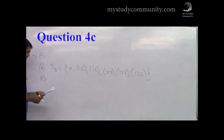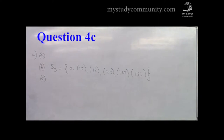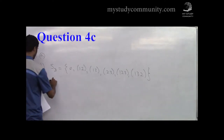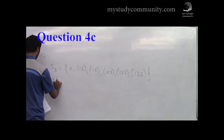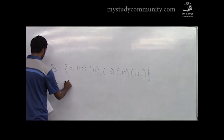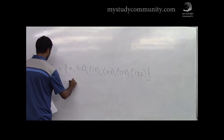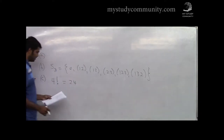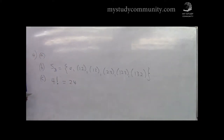Part C: how many elements are in S₄? The answer is 24. The number of elements in Sₙ is n factorial, so 4! = 24. That is correct.